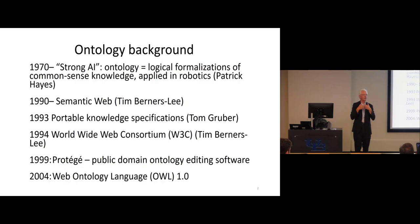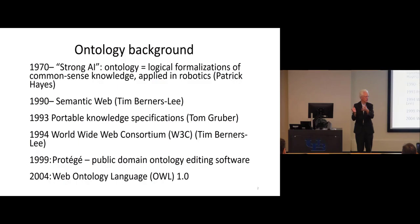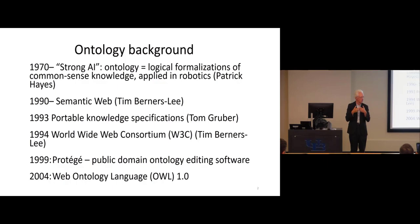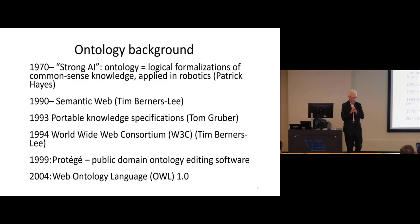Ontology was introduced into computer science in the 1970s as part of the new AI boom. In those days people thought that the way to build an intelligent computer — particularly an intelligent robot — was to teach the robot human common sense, and the way to do that was to logically formalize common sense knowledge. They created what they called ontologies, which were logical formalizations of parts of human common sense or other kinds of knowledge.